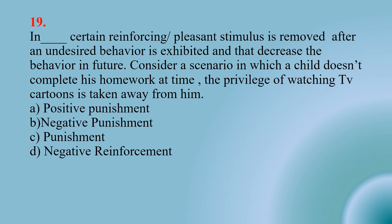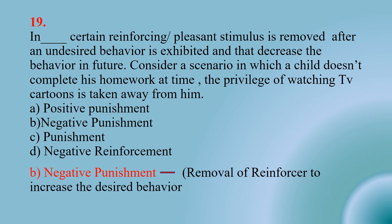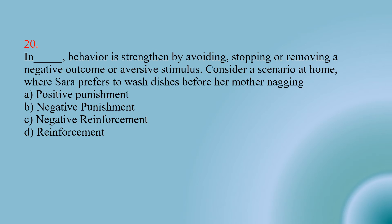Number nineteen: A reinforcing or pleasant stimulus is removed after an undesired behavior is exhibited, decreasing the behavior in future. A child doesn't complete his homework on time, so the privilege of watching TV cartoons is taken away — Option A: positive punishment; Option B: negative punishment; Option C: punishment; Option D: negative reinforcement. The right option is B — negative punishment: removal of a reinforcer to decrease the undesired behavior.